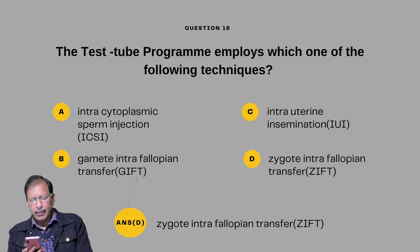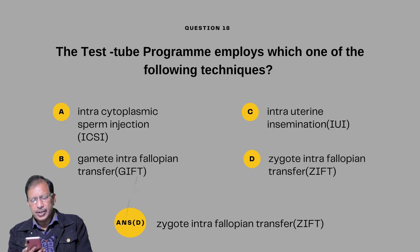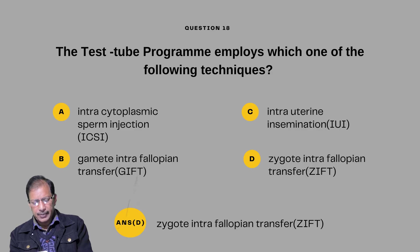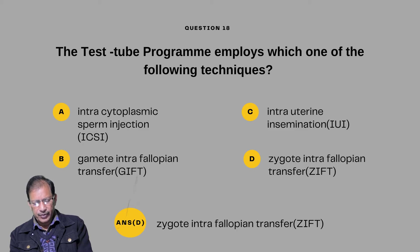Question number seventeen: The test tube baby program actually employs which one of the following techniques? A — Intra-cytoplasmic sperm injection, ICSI; B — Gamete Intrafallopian Transfer, GIFT; C — Intrauterine insemination, IUI; D — Zygote Intrafallopian Transfer, ZIFT. Answer will be D — Zygote Intrafallopian Transfer, ZIFT.